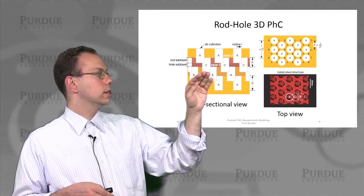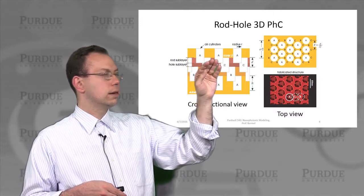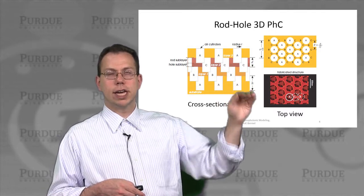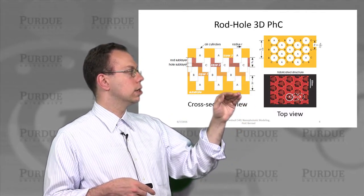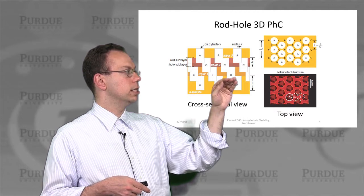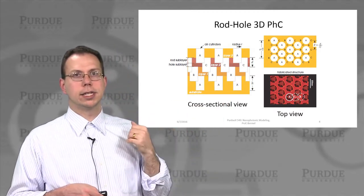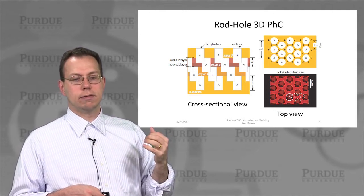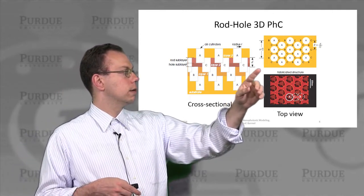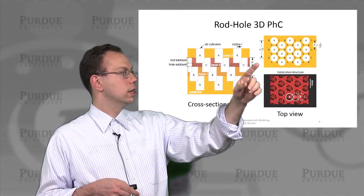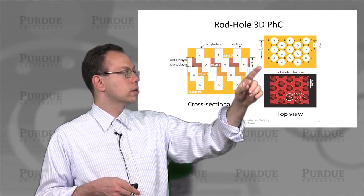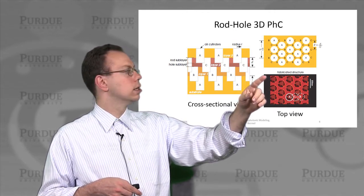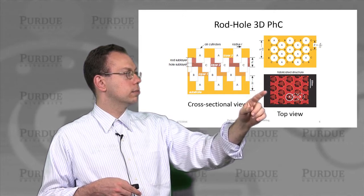Then you etch a series of C holes, deposit layer 3, and etch a series of A holes that line up with the original A holes below. So the series of A, B, C holes repeated over and over again gives rise to the 3D photonic crystal through a layer-by-layer fabrication process. Looking from above in the upper right-hand corner, you can see that all the A's are aligned, all the B's and C's are aligned, and they're offset from one another in lateral X and Y directions.